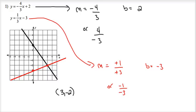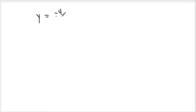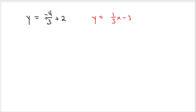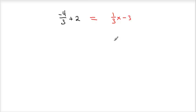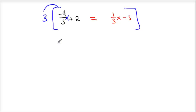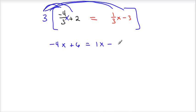Let's do this algebraically. Here are my two equations: y equals negative 4 thirds x plus 2, and y equals 1 third x minus 3. Both equations are equal to y, so they're equal to each other at some point. Multiply everything by 3 to clear fractions: 3 times negative 4 thirds x gives negative 4x, 3 times 2 gives 6, and 3 times 1 third x gives x, while 3 times negative 3 gives negative 9.